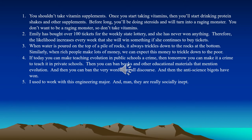Number two: Emily has bought over 100 tickets for the weekly state lottery and she has never won anything. Therefore, the likelihood increases every week that she will win something if she continues to buy tickets. This is the gambler's fallacy. It is a causal fallacy because it is the mistaken belief that past losing will cause future winning. That's not the case — there is no causal connection whatsoever between your past losing and your future winning. So that's a false cause; there's no causal link.